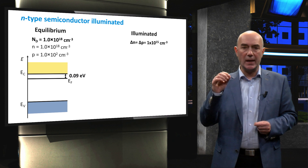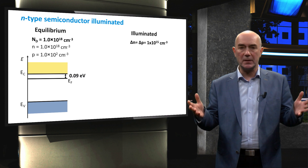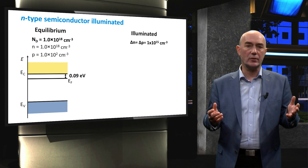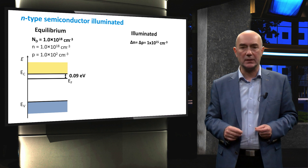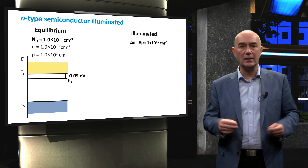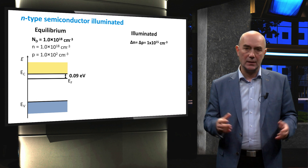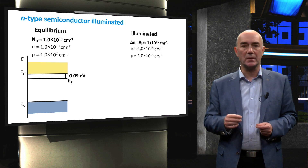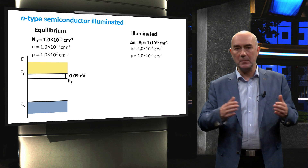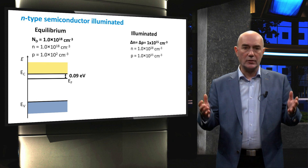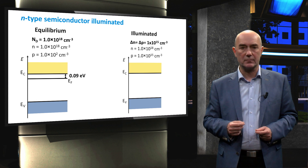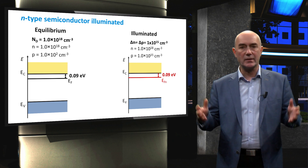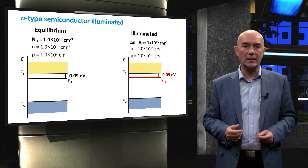When we illuminate this N-type semiconductor with an injection level of 10¹⁵ charge carriers per cubic centimeter, you may notice that this injection level is far below the equilibrium electron concentration of 10¹⁸, but far larger than the hole concentration of 10². This means the electron concentration remains essentially unchanged at 10¹⁸ per cubic centimeter, while the hole concentration simply becomes equal to our injection level, delta P. Since the electron concentration does not change significantly, the quasi-Fermi level for electrons stays at the same position as the equilibrium Fermi level.